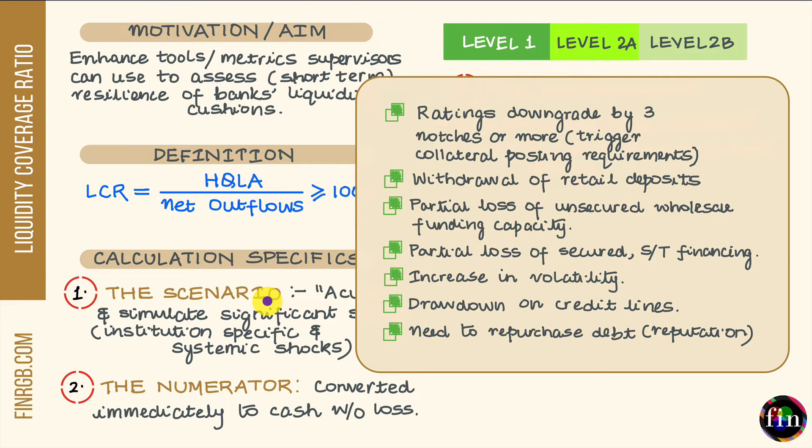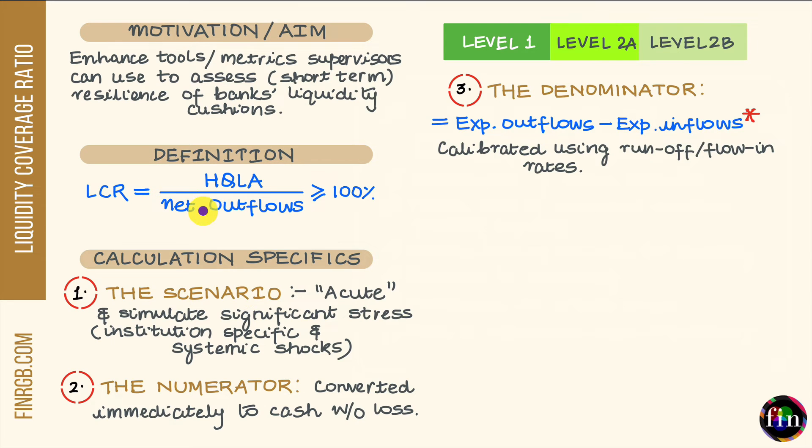Now, let's talk about the numerator for our LCR, the HQLA. Think of the HQLA, the liquidity cushion or asset buffer, as containing those assets which can be converted immediately to cash with no loss of value or maybe a negligible loss of value. These assets which can be deemed as high quality liquid assets have a few fundamental characteristics.